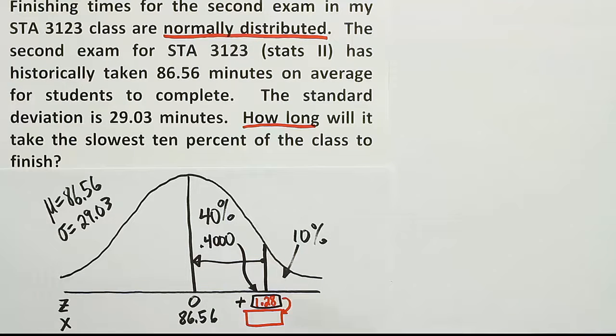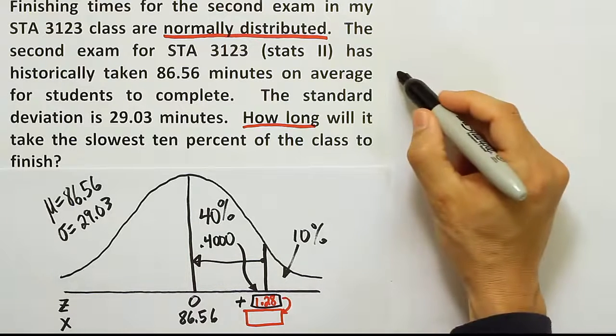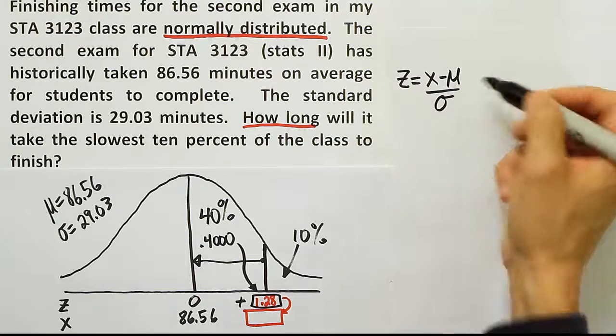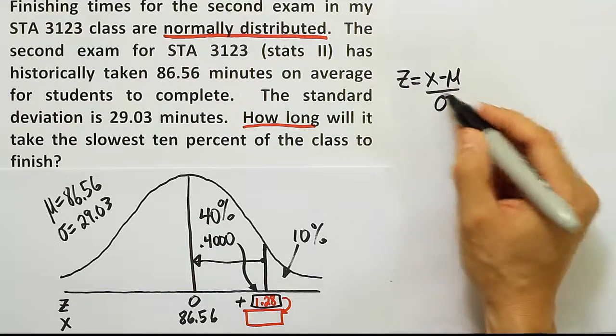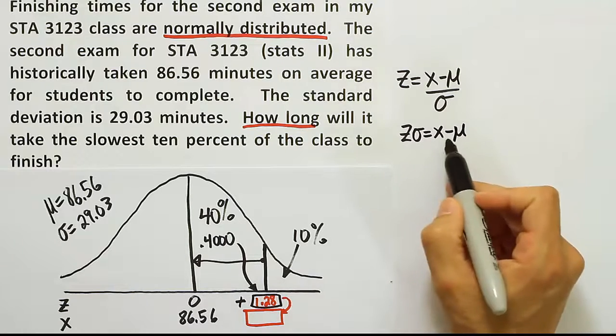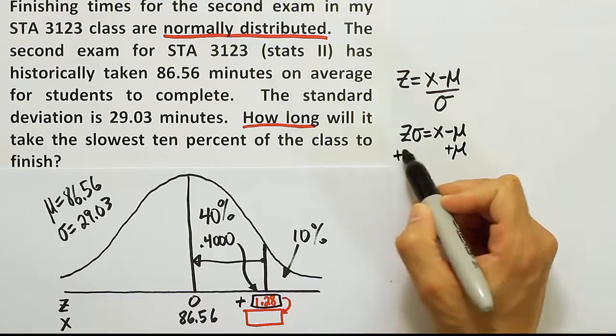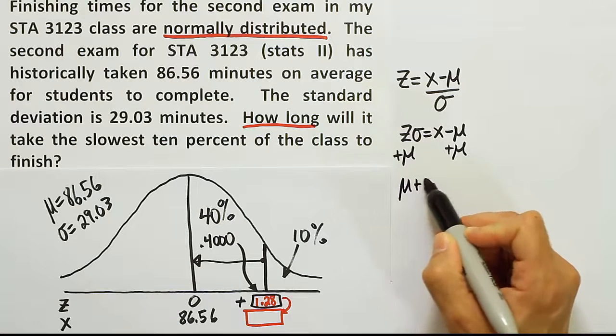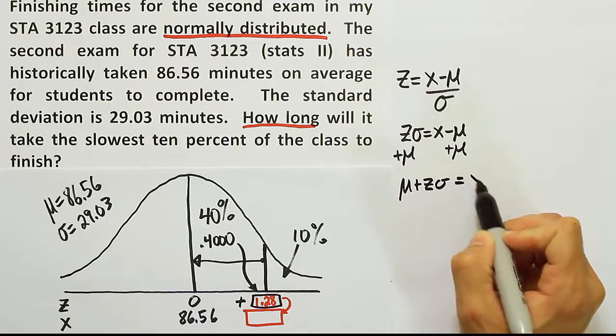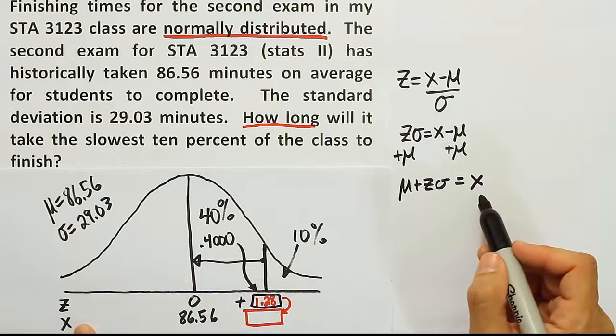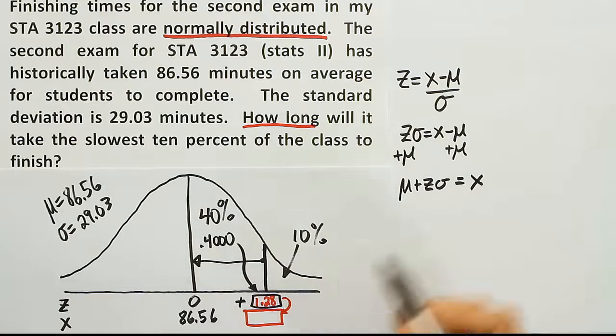If you remember before when we started out with the value here, we converted into a z-score. We used the z-score formula. We used this formula: z is equal to x minus the mean over sigma. If we do a little algebra on this, we can multiply both sides by sigma. We end up with z sigma is equal to x minus the mean. And if we're solving for x, we can add mu to both sides. And when we're finally done, we get this statement. We get the idea that the mean plus z sigma is equal to x. So if I want to know what the corresponding finishing time or x value is, all I have to do is to plug in that z-score we have, this mean and this standard deviation, and we'll end up with the proper finishing time.